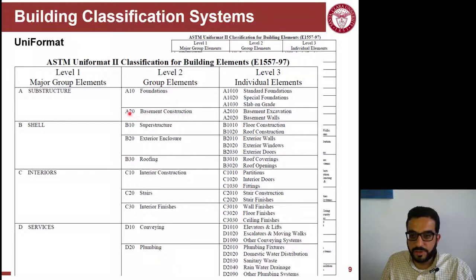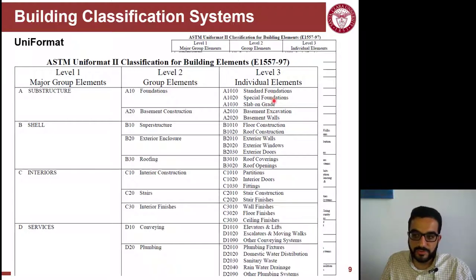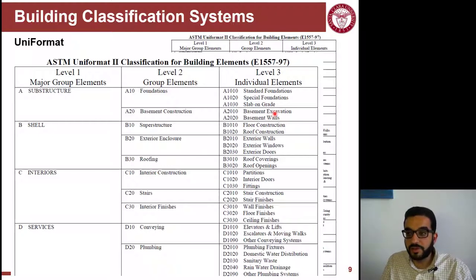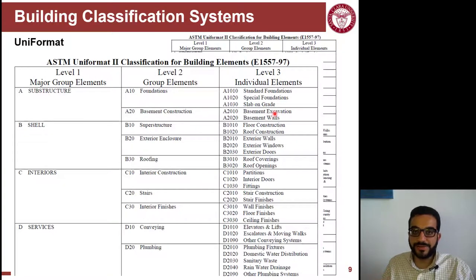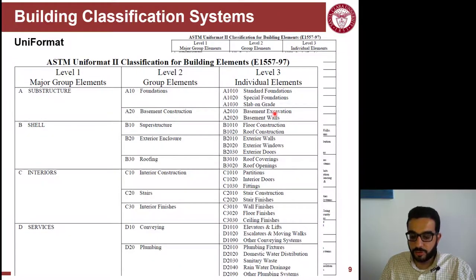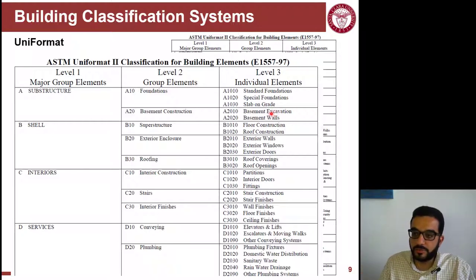Basement construction includes basement excavation. You might think excavation is not an assembly or component, but what does excavation deliver? You're actually delivering the basement space by excavating, so you're considering the void that's occupied by the basement — that's a unique and interesting example of work included in Uniformat, which is assembly-based. The basement walls are the next item. The coding goes A, B, C all the way to F, and then A10, A20, and A10 is broken down to A1010 all the way to A1030 — that's the coding used to label the different parts of this classification system.